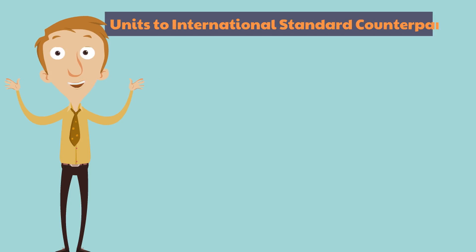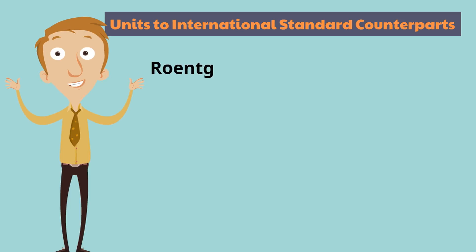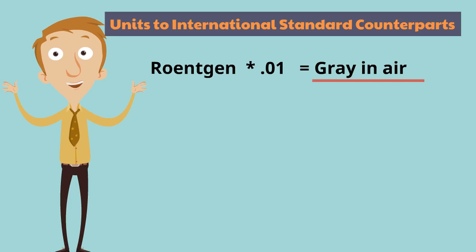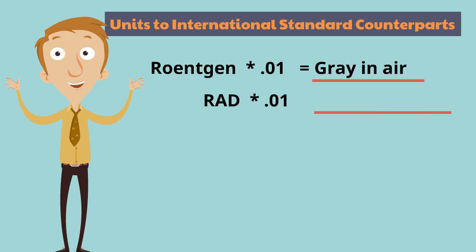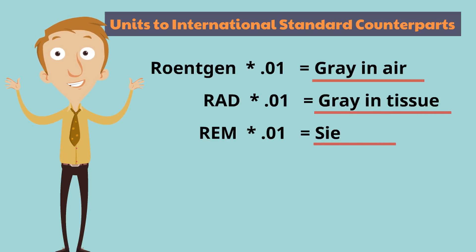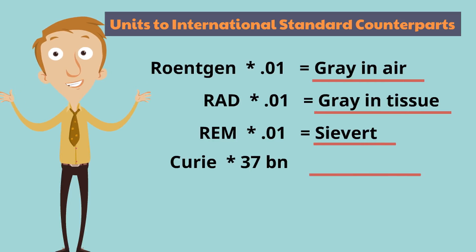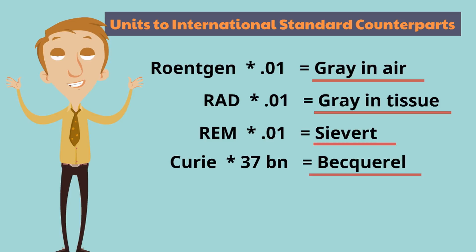Now let us convert these units to their international counterparts. Multiply Roentgen by 0.01 to obtain gray in air. Multiply RAD by 0.01 to obtain gray in tissue. Multiply REM by 0.01 to obtain sievert. Multiply Curie by 37 billion to obtain becquerel.